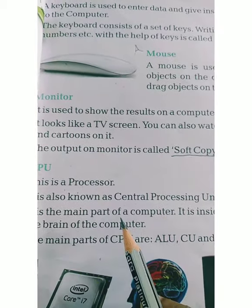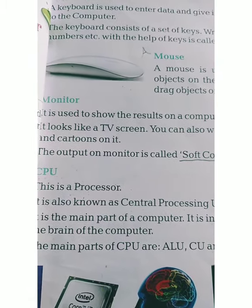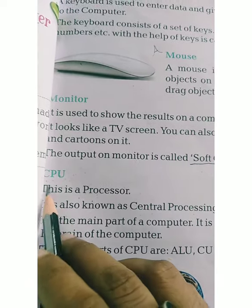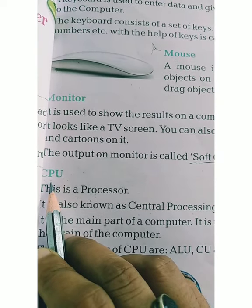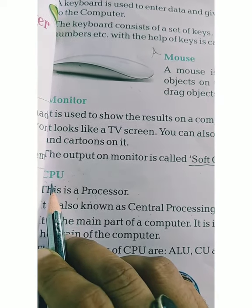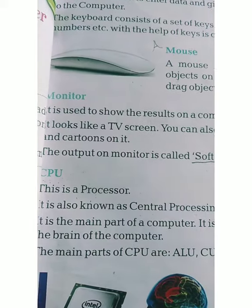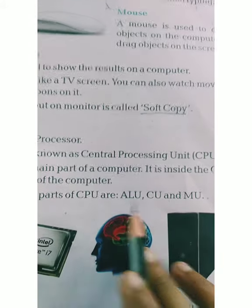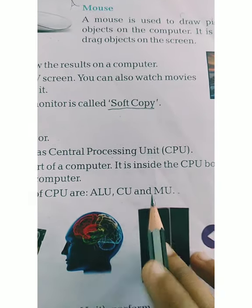Just as we have a brain, the computer also has a brain. The brain of the computer is the CPU. There are three main parts of the CPU: ALU, CU, and MU.